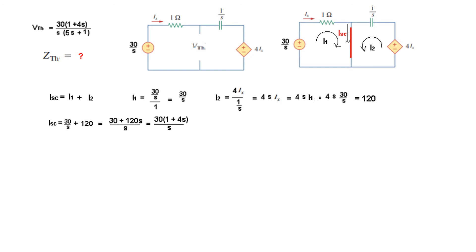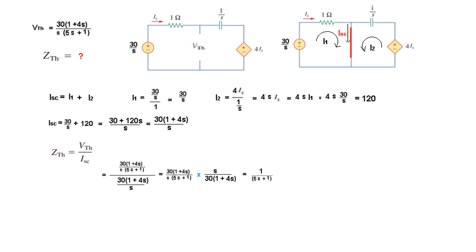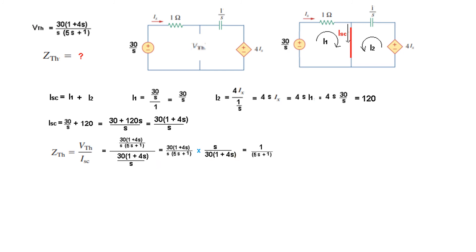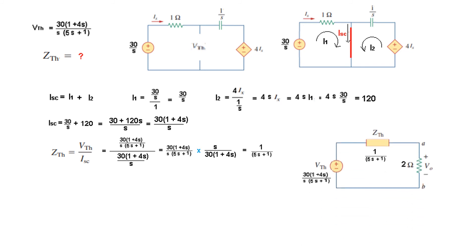Using the Thevenin relation, Z_thevenin = V_thevenin / i_sc. Plugging in V_thevenin and i_sc and solving gives us Z_thevenin. We can now draw the Thevenin equivalent circuit with V_thevenin, Z_thevenin, and add the 2-ohm load resistance to find V_o.